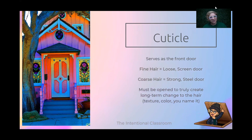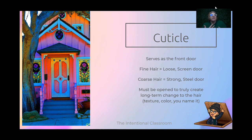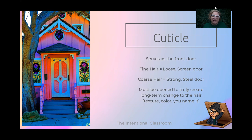The cuticle layer serves as your front door — it creates the barrier between the outside world and the cortex, which is where all of the magic actually happens. If you have super fine, thin hair, you usually have a very loose cuticle — it's kind of like a screen door, easy to walk into. Coarse hair, however, is the opposite: it's super compact, very strong, very hard to open — like having a steel door. Coarse hair is much harder to change because it's a lot harder to get into that cortex. The cuticle must be opened to truly create long-term change to the hair.